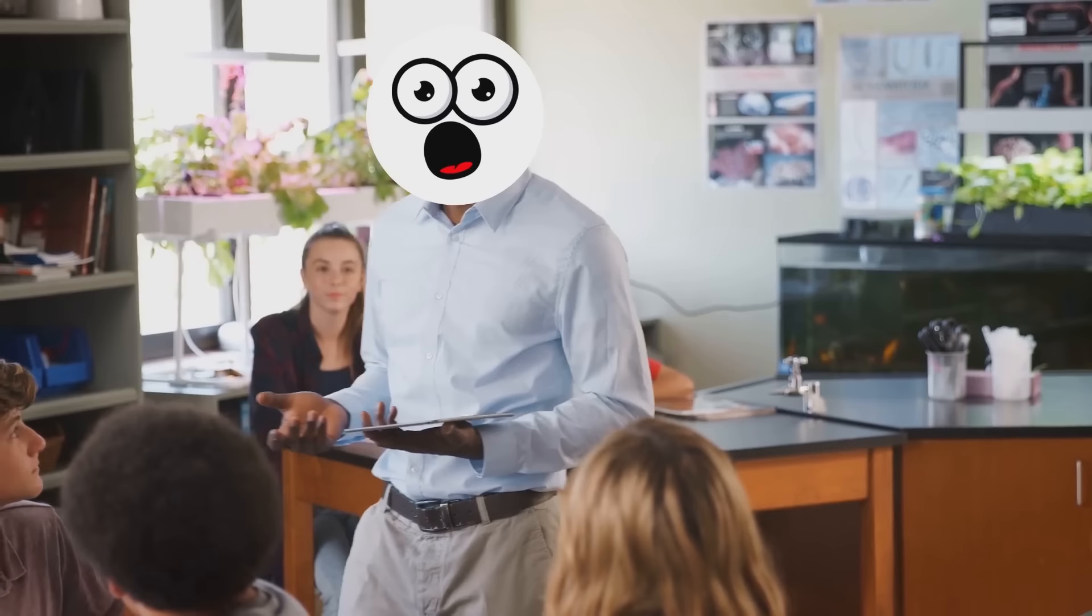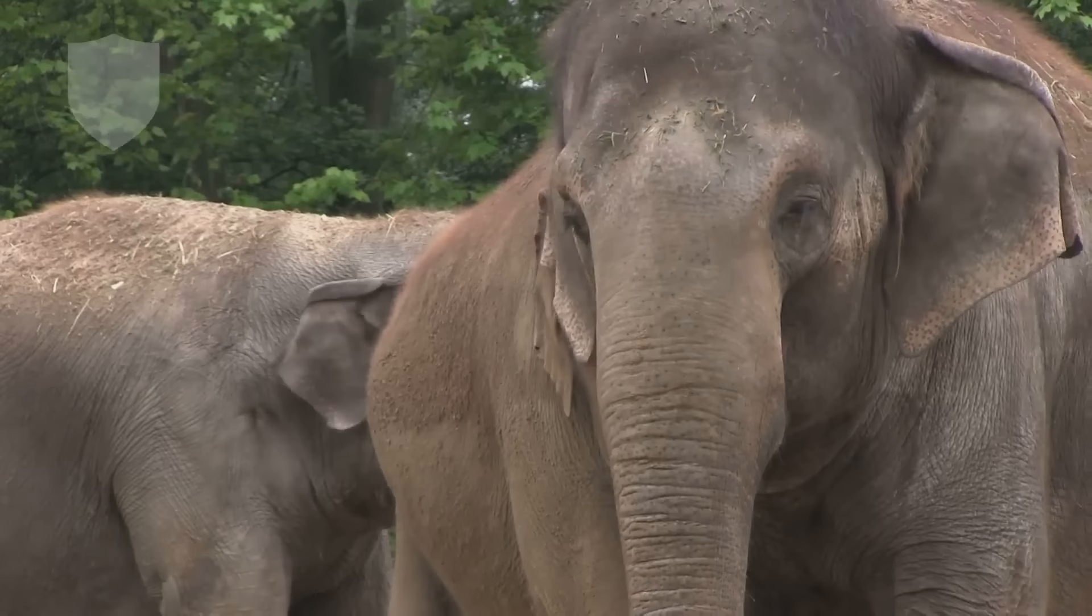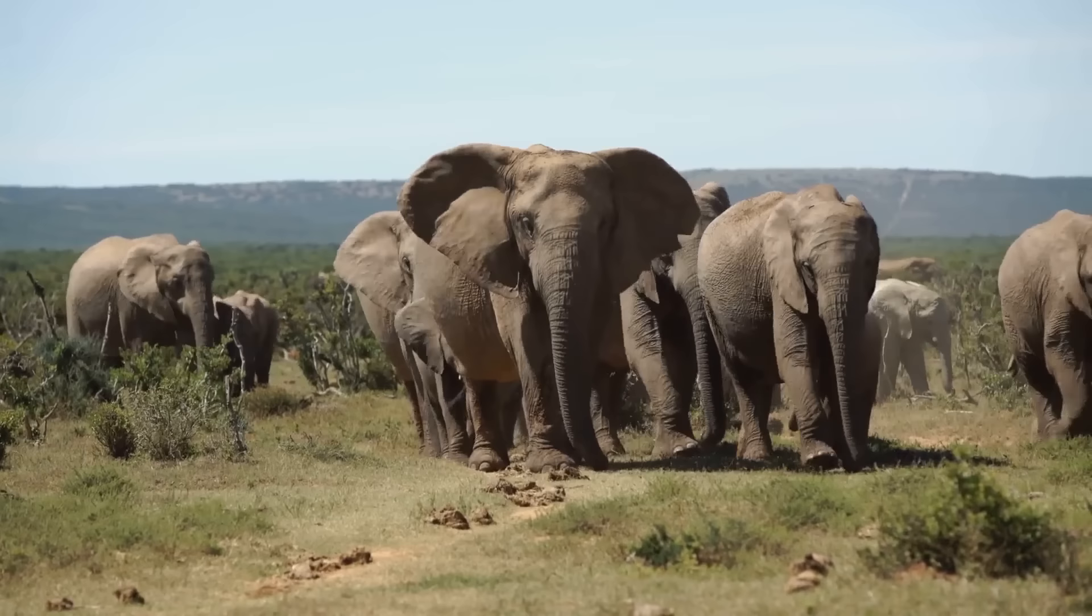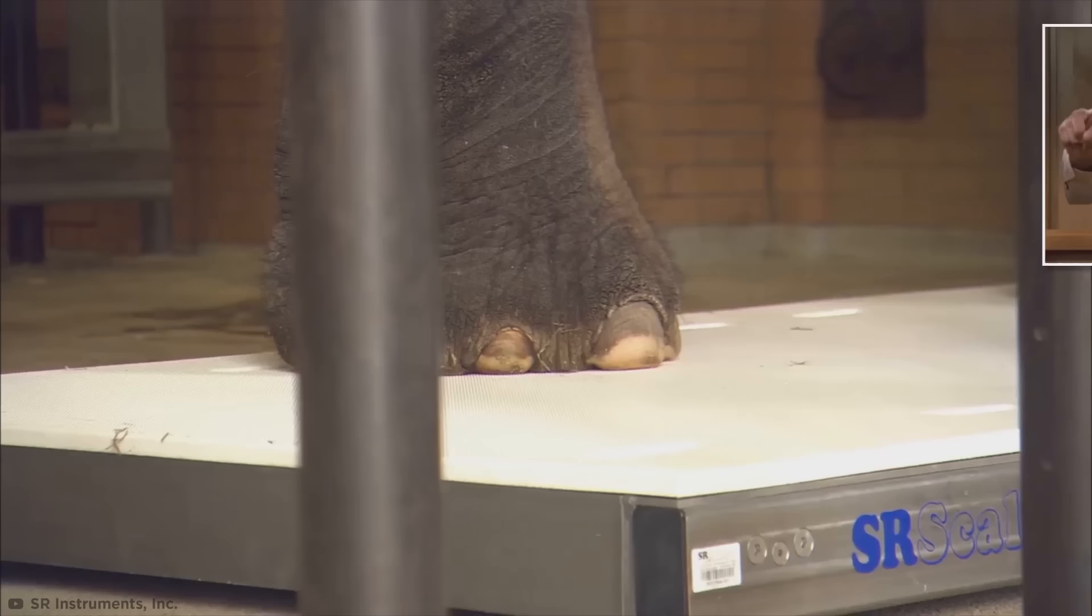The main reason why no one has ever seen an elephant jump, unless it was in a Saturday morning cartoon, is simple. They don't have to. Think about it this way. Most stereotypically jumpy animals, like kangaroos, monkeys, and frogs, jump mostly to get away from predators. But when you're as big and strong as an elephant, there are plenty of other ways to protect yourselves. Not to mention the fact that elephants travel in large, protective social groups called herds.